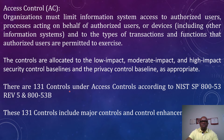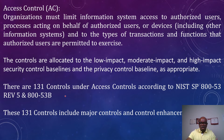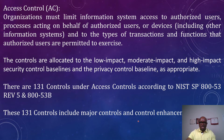There are 131 controls under access control according to NIST SP 800-53 Revision 5 and 800-53B. This means that the total number of controls under the access control family is 131, and this includes both major controls — or base controls — and control enhancements. Control enhancements are controls that are meant to fortify and increase the strength of the base control. We'll see examples of those controls in the next slide.